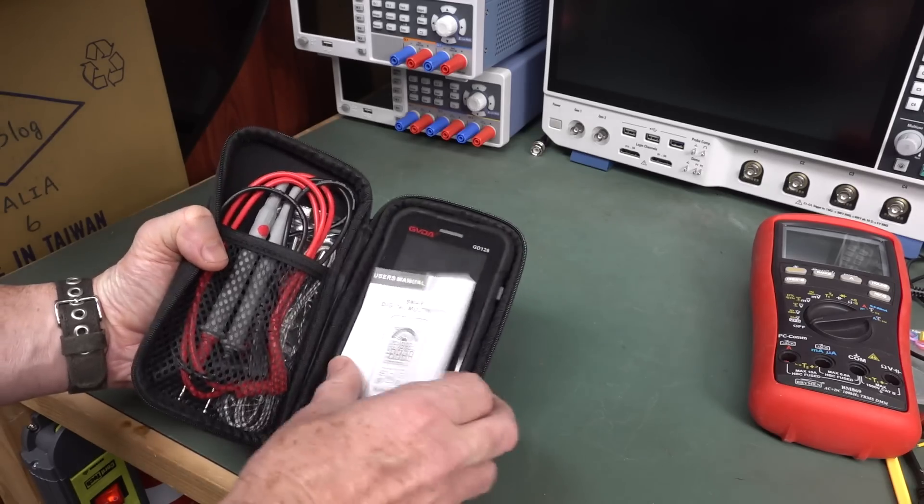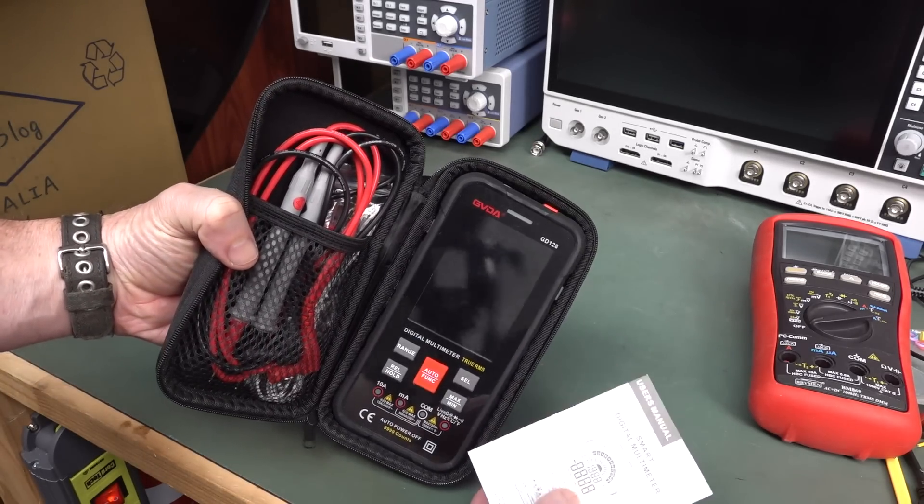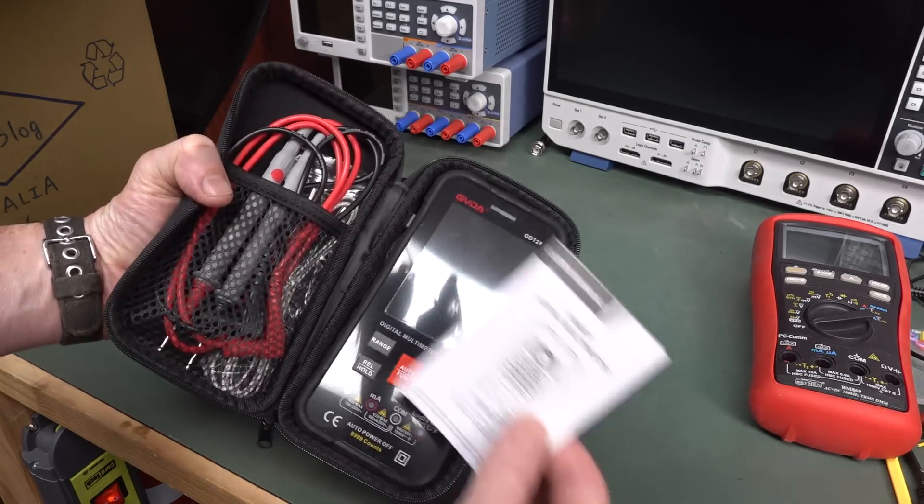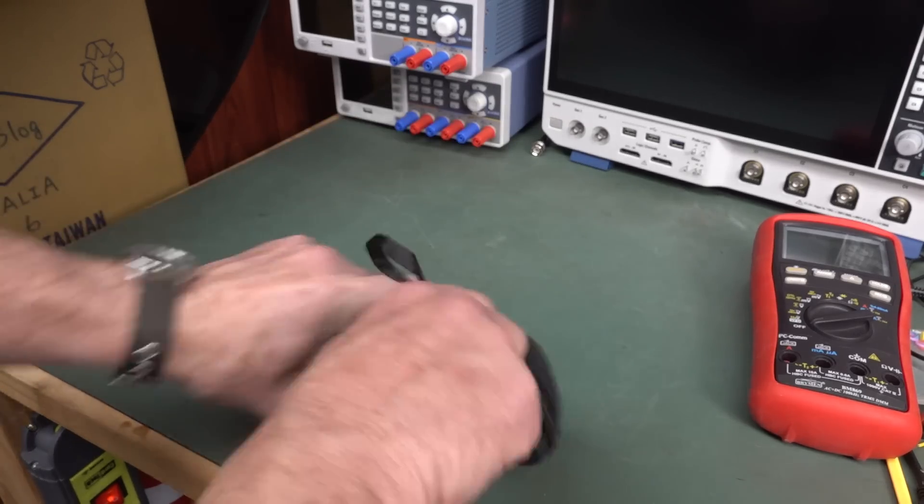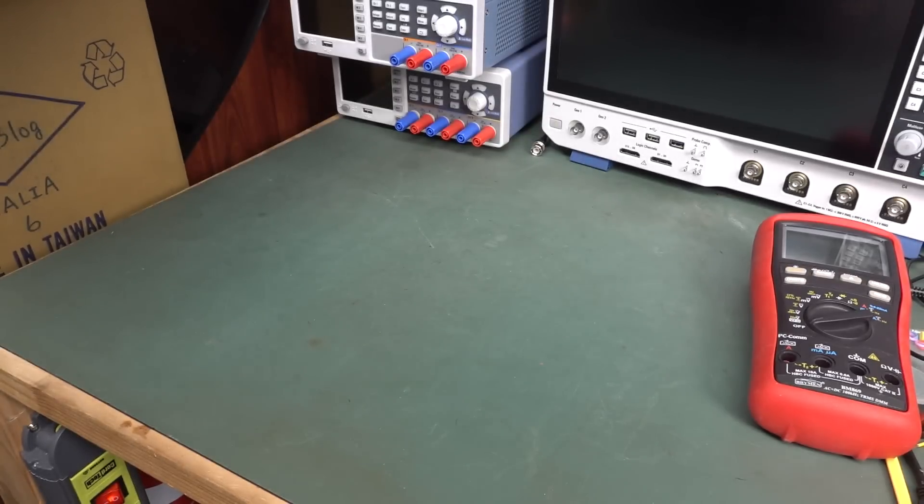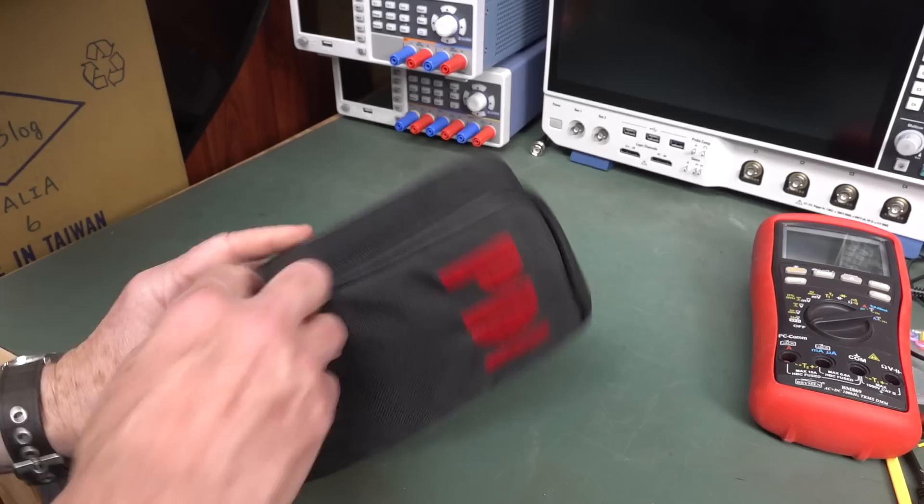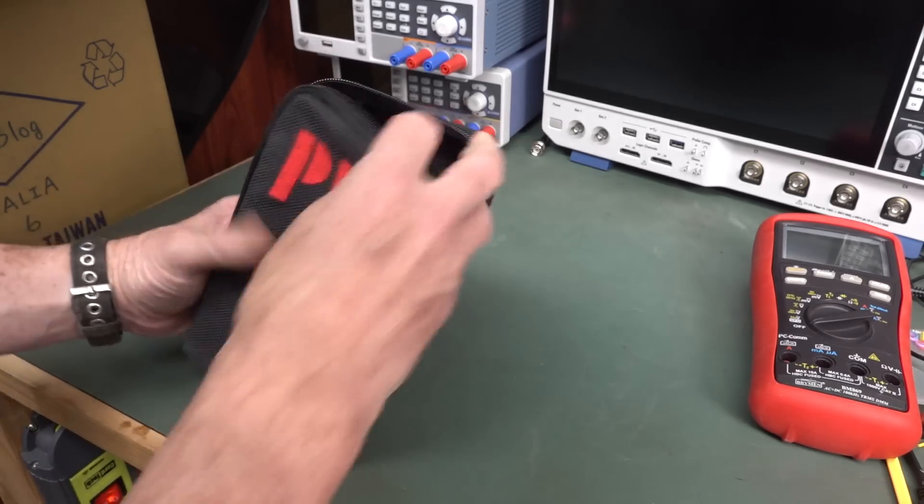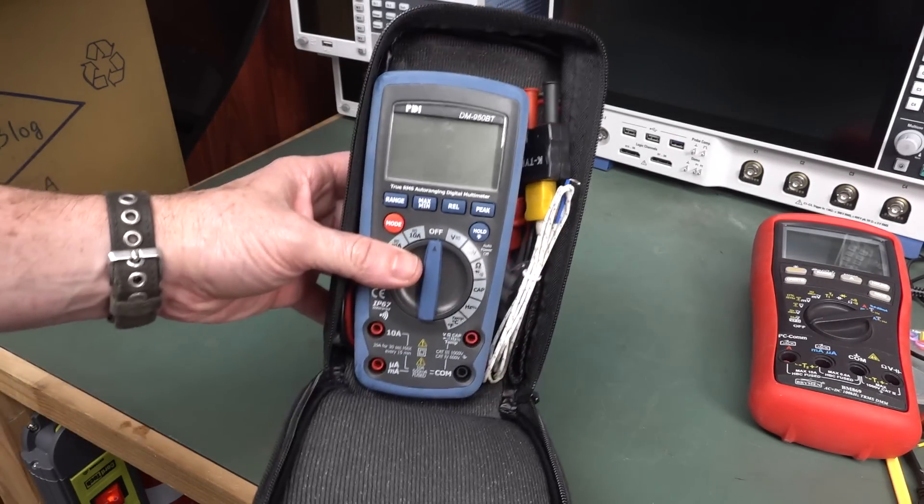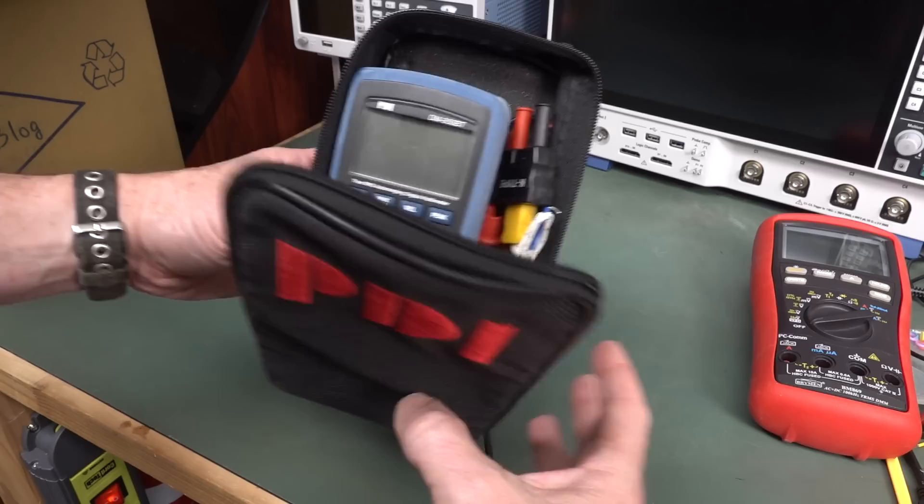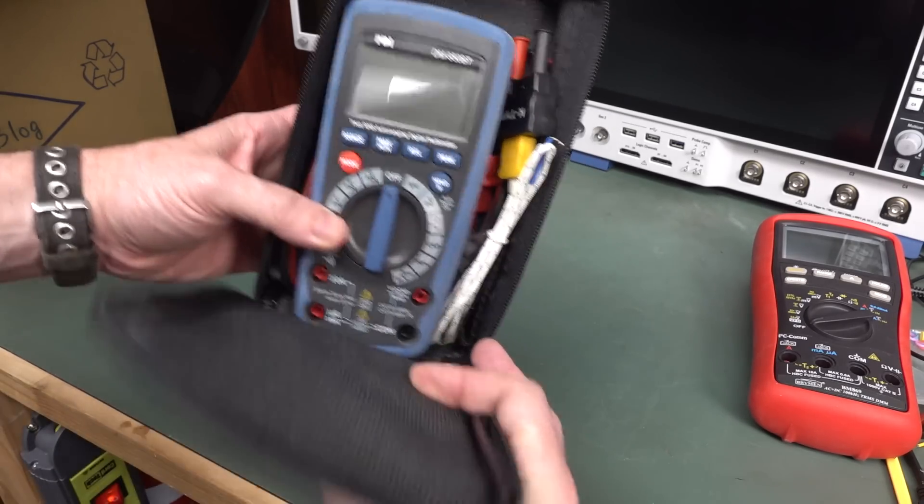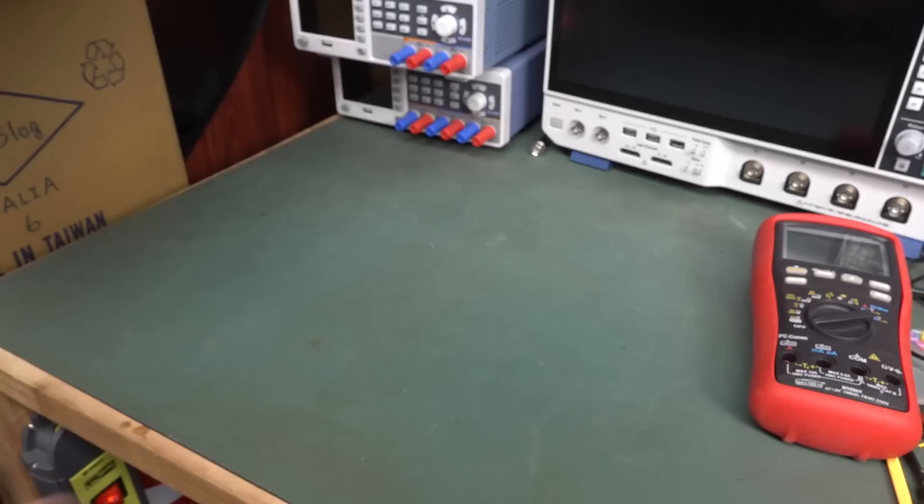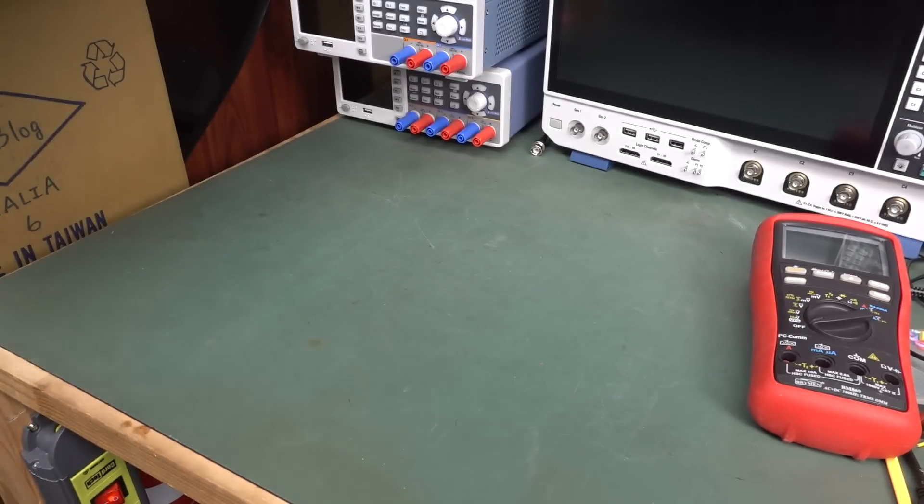And what have we got? A GVDA, GD128, complete with manual in the pouch. That was another mailbag jobby. I've got a pouch, a PDI. That's the brand. Once again, another mailbag item. That's just a rebadged Chem, isn't it? I think that's a Chem manufactured one, which looks similar to X-TEC and stuff.